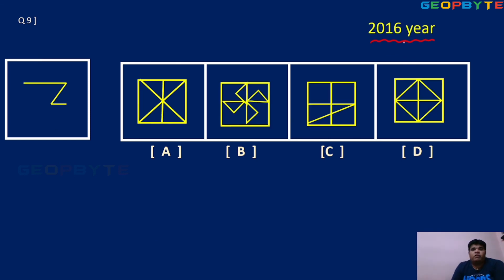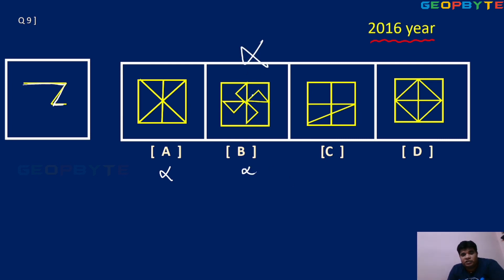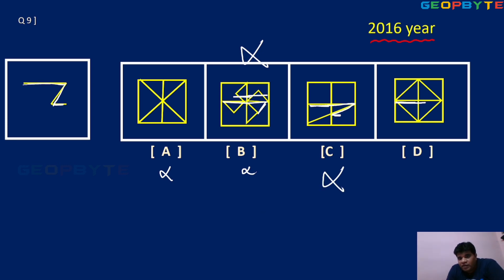This is a 2016 year problem. Same Z shape but with a very long line — a diagonal line and a small line. In option A — wrong. In option B — wrong, the diagonal curve is not existing. In option C — a long line and small line are there, but the right-side line is not existing, so wrong. In option D, you can check clearly: this horizontal line, this vertical diagonal line, and this small line — the Z shape is satisfied. So option D is the right answer.